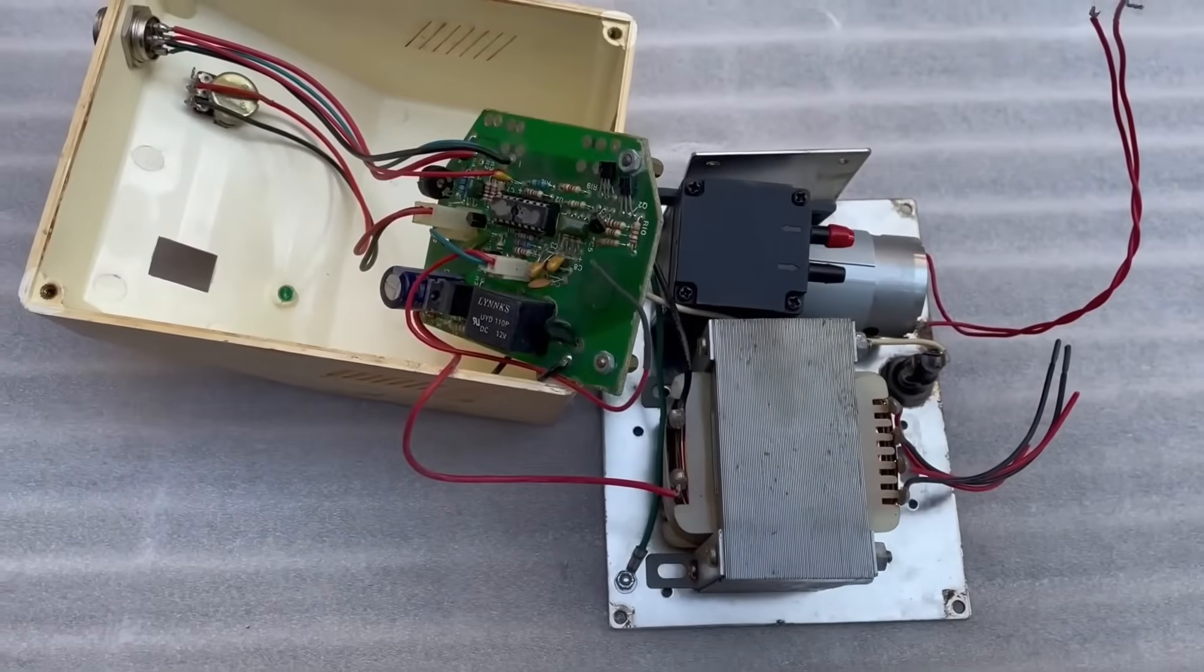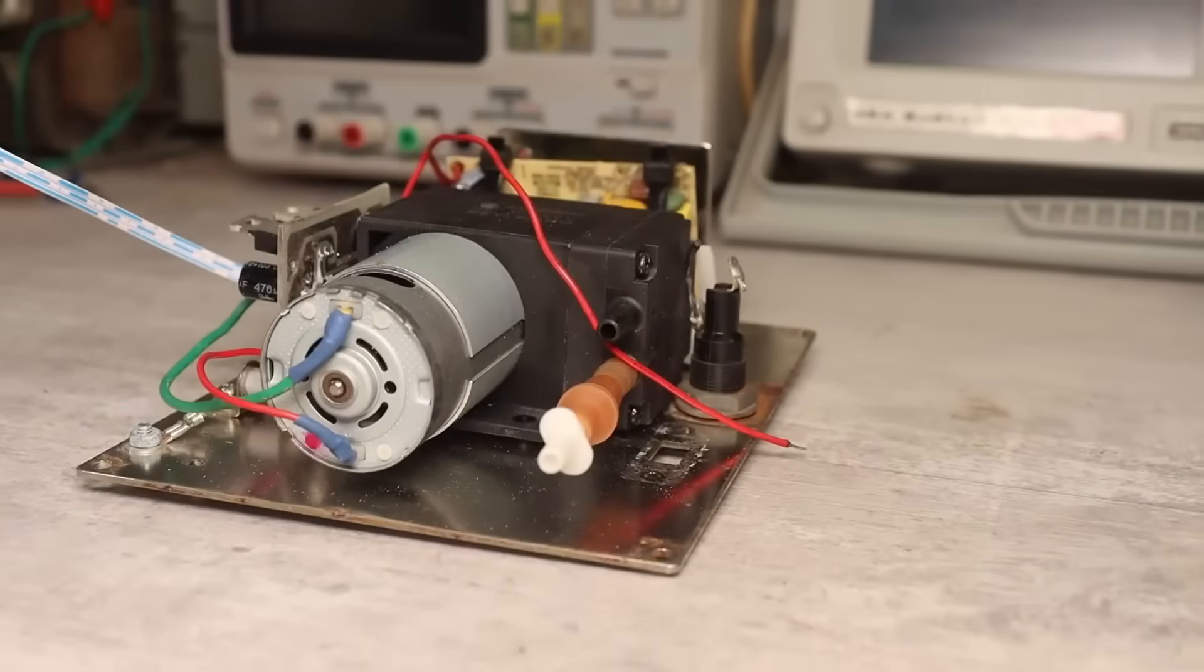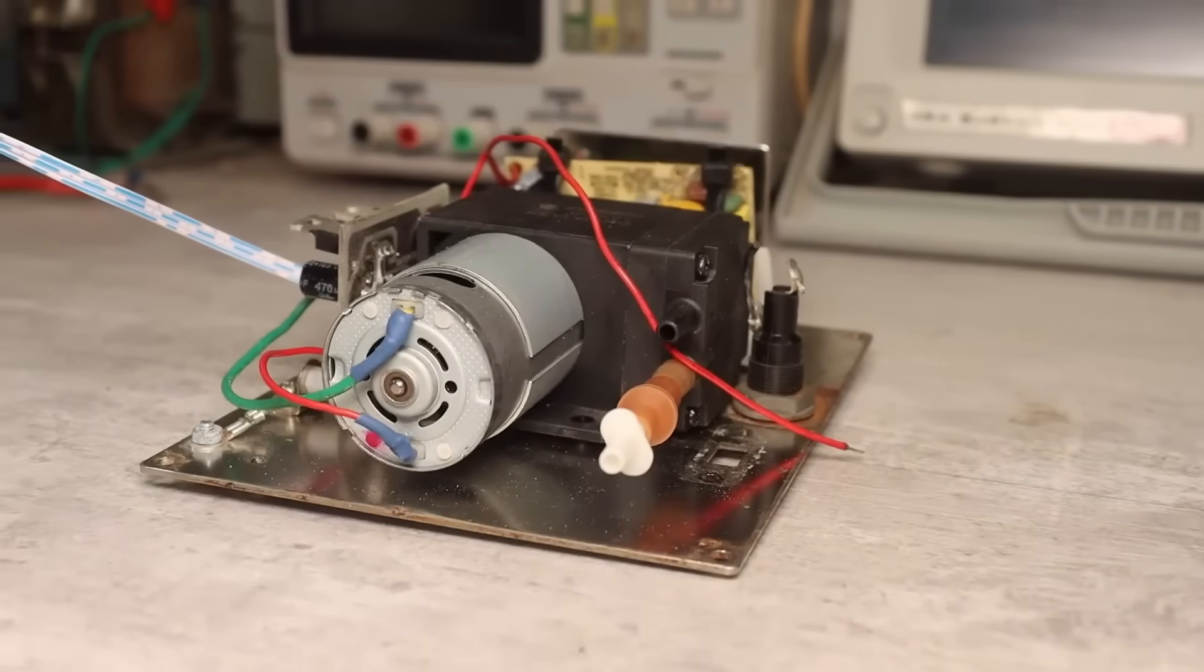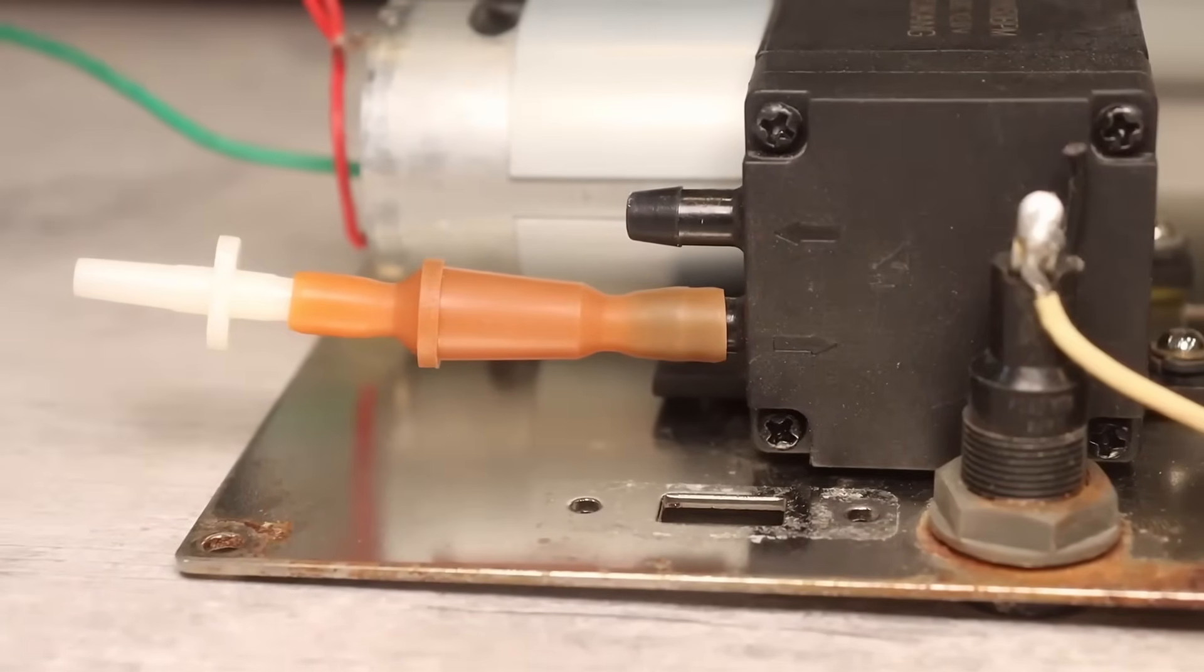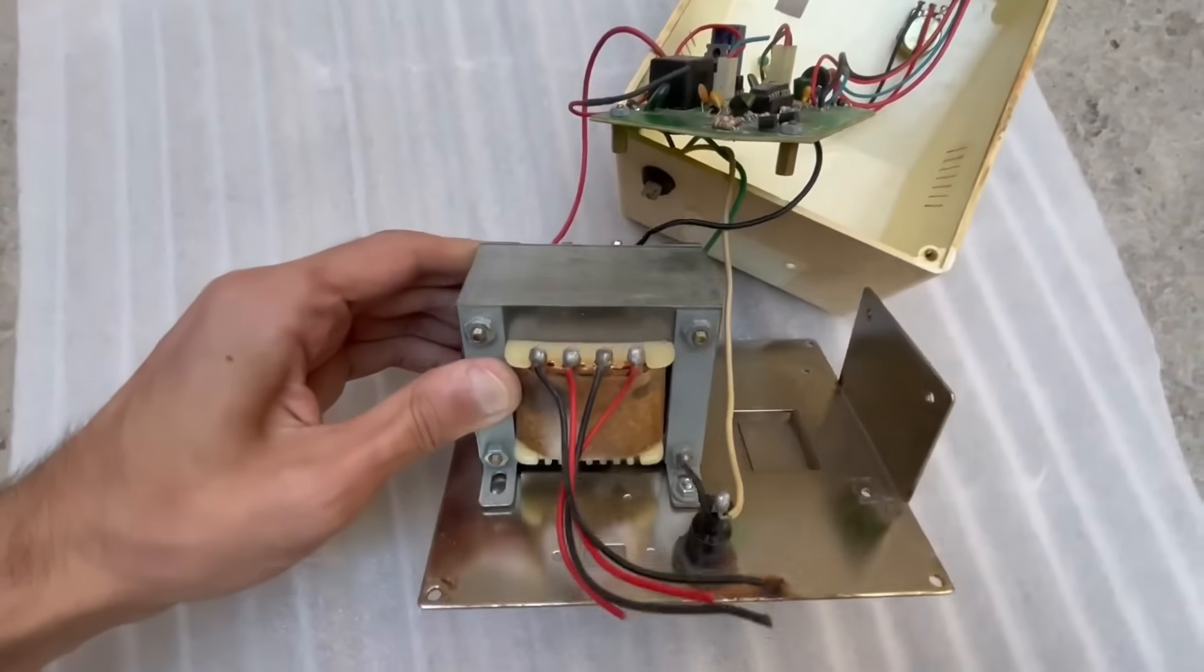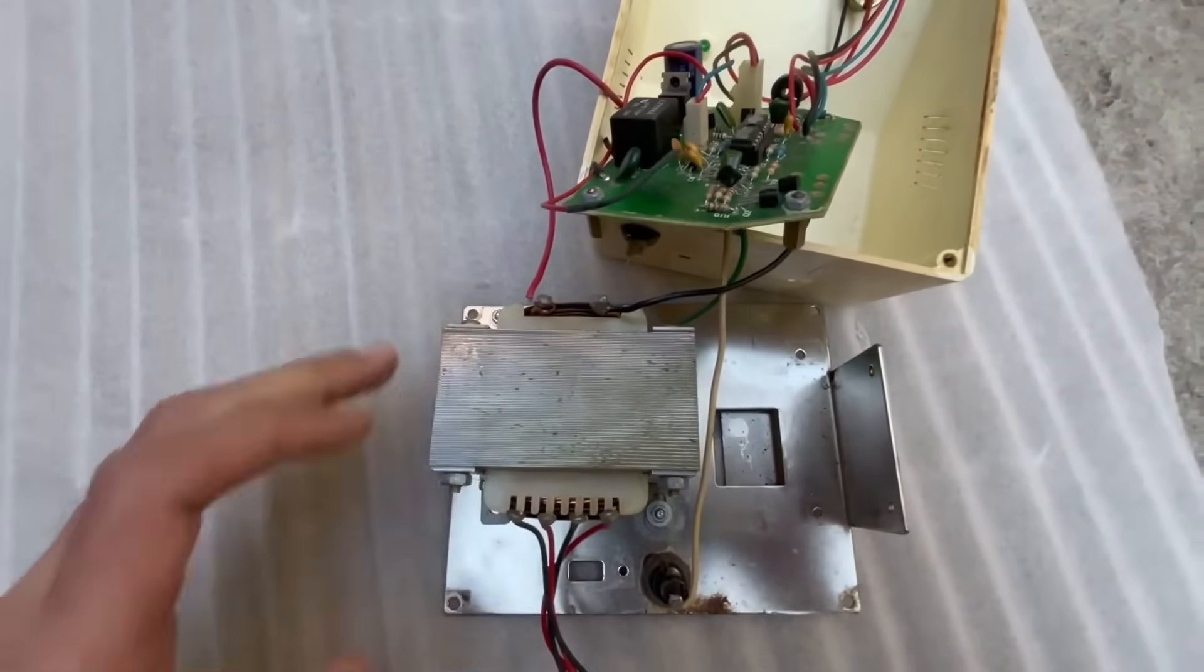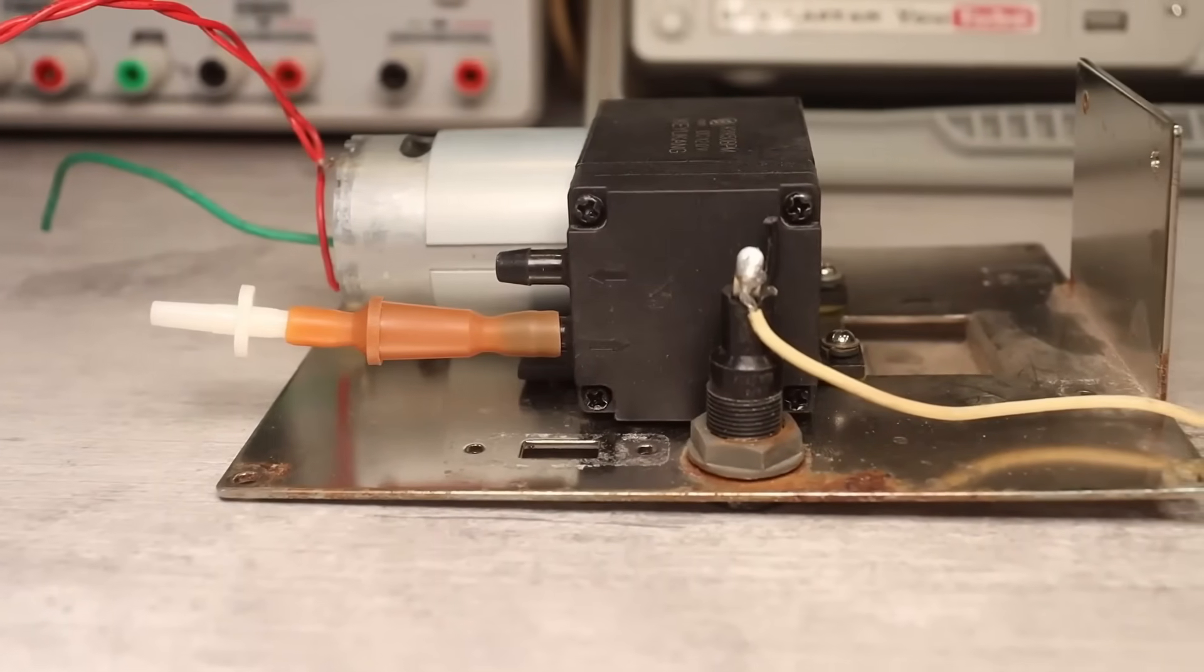But I have plans to assemble a small heat gun, specifically for SMD in this same casing, using the same pump, which will then function as a compressor. Therefore, I will probably replace the iron transformer with something smaller. Moreover, it's quite excessive, because the maximum the motor consumes when powered at 12 volts is about 0.6 to 0.8 amperes.